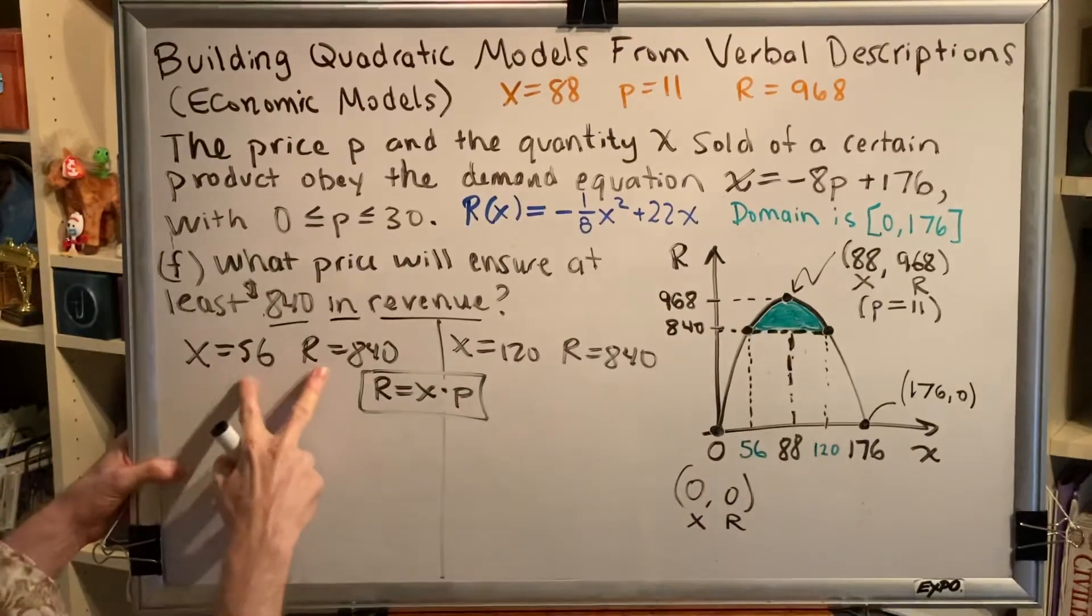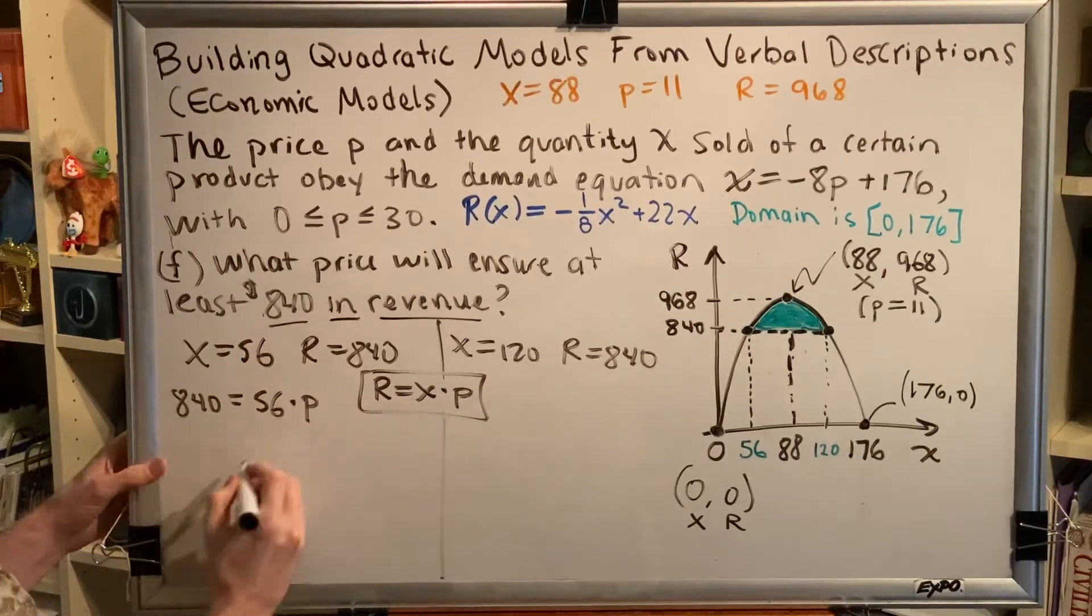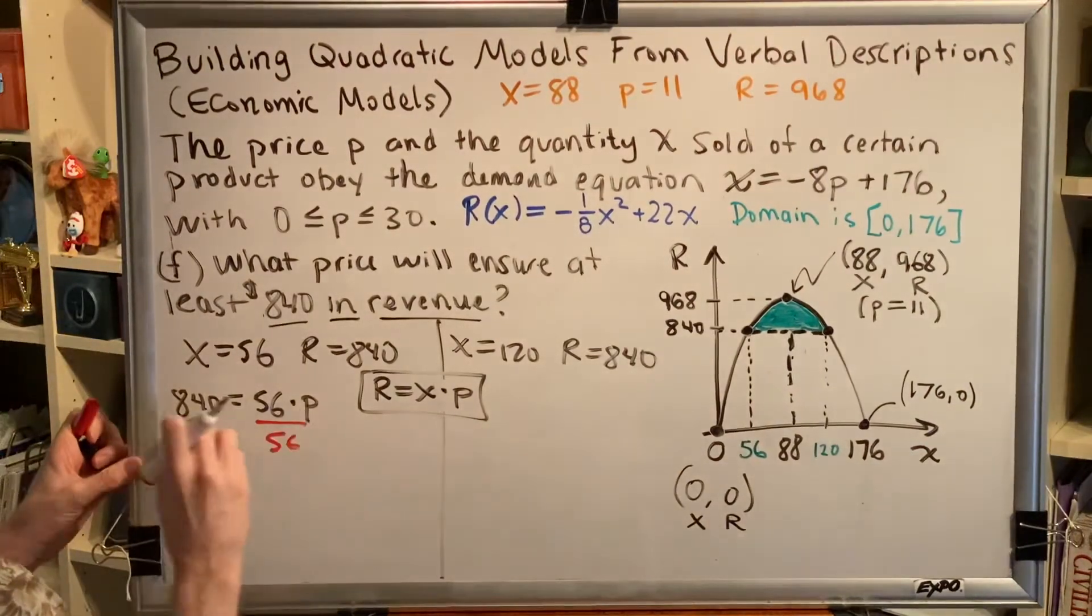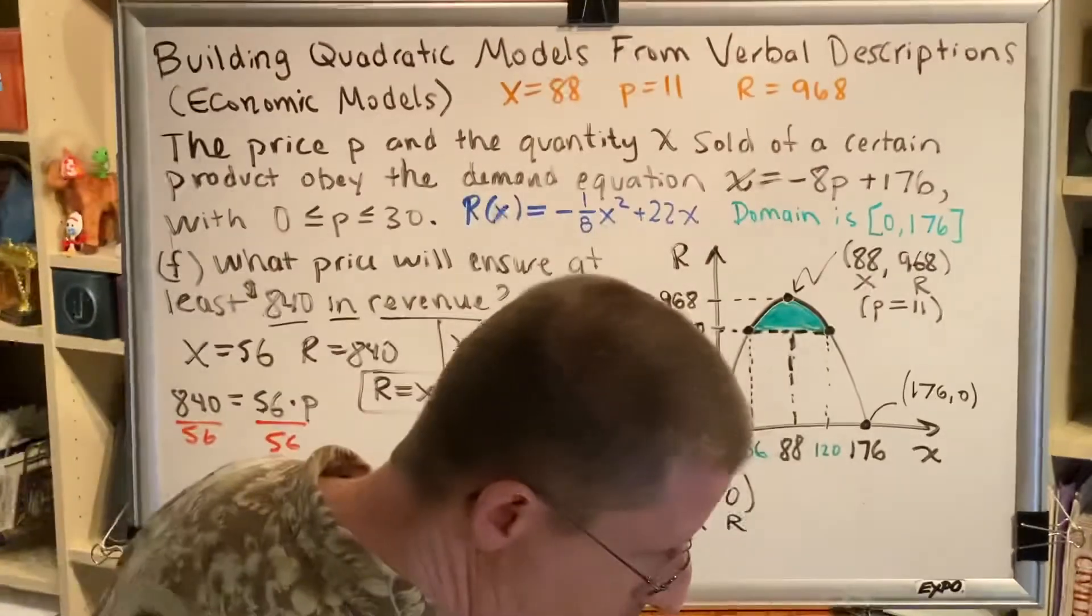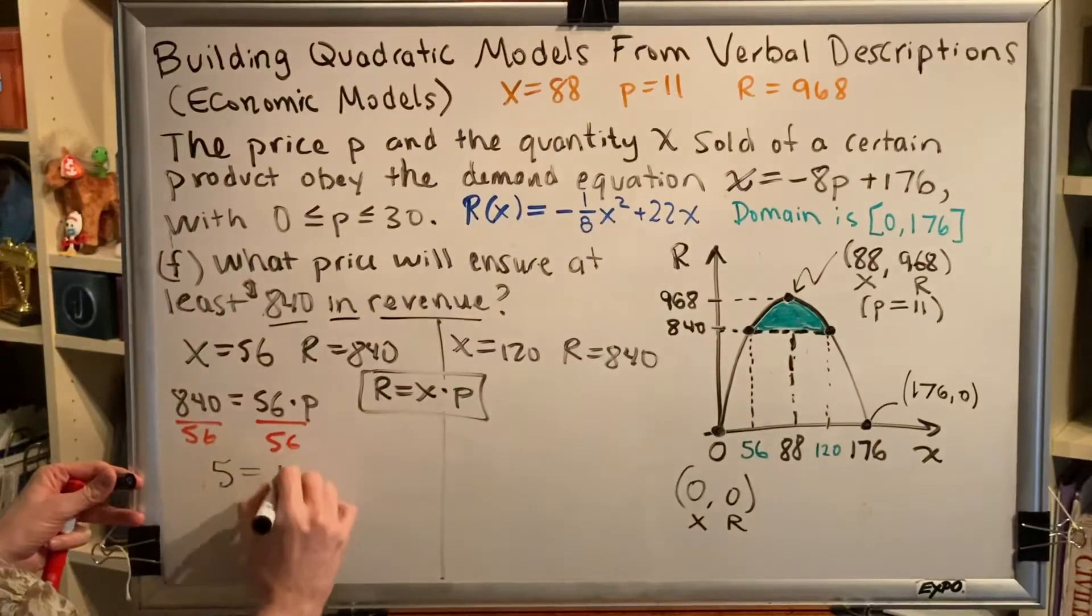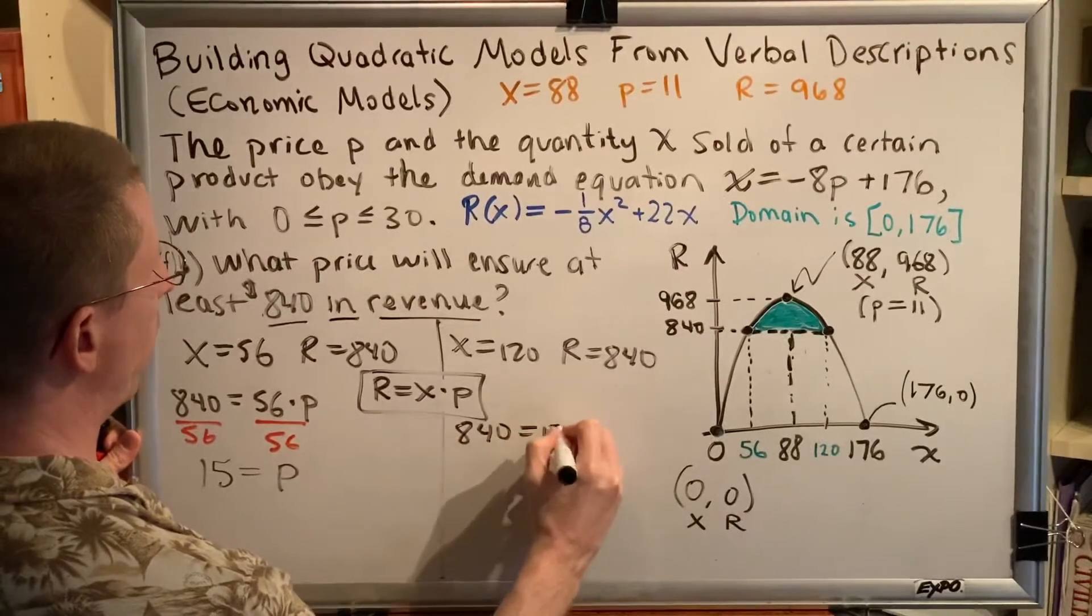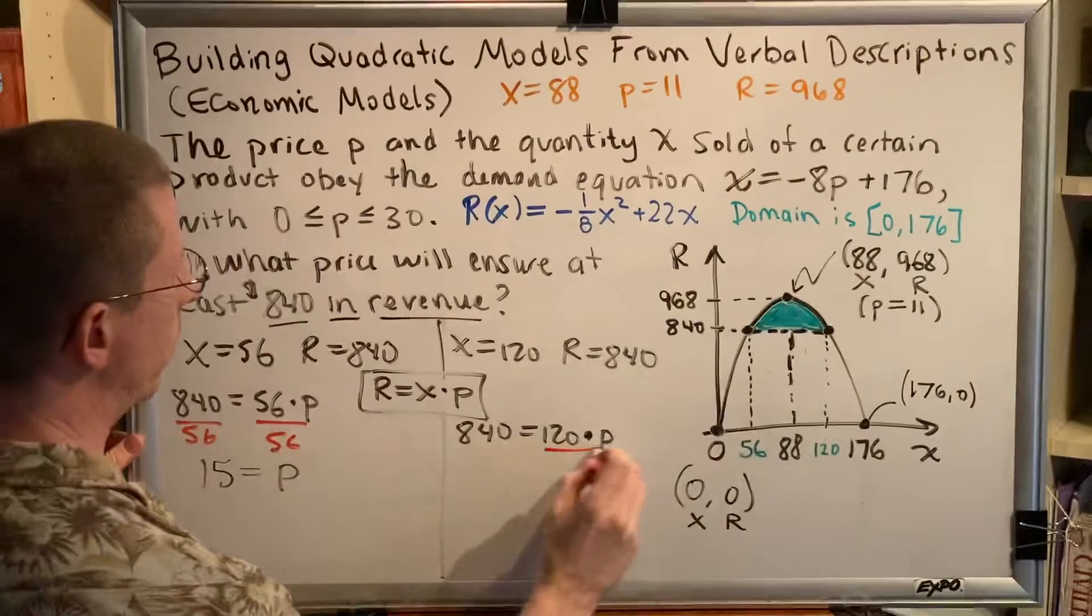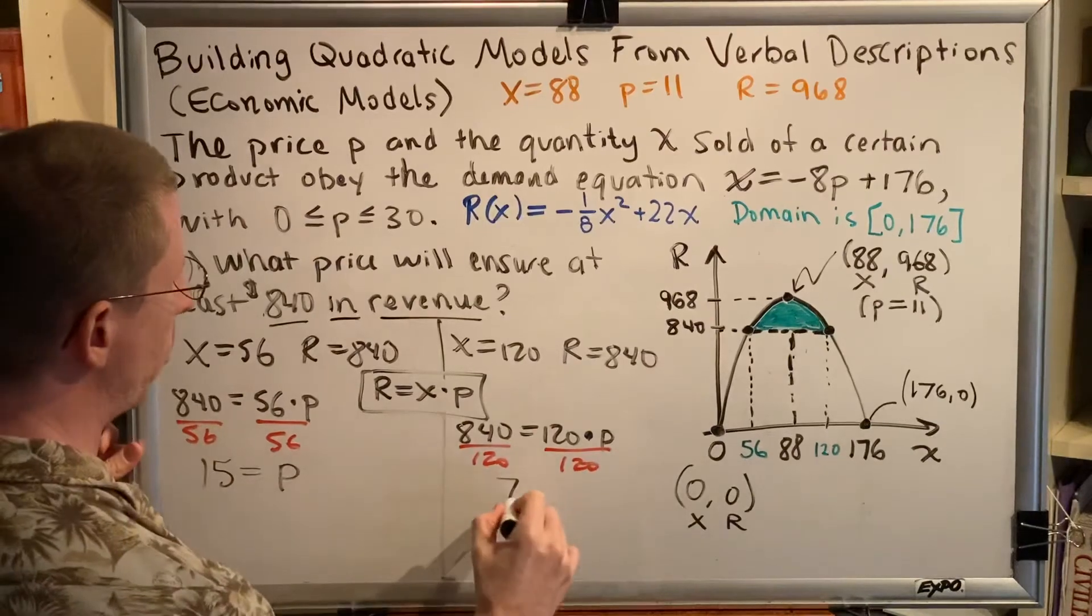Plugging these two values into this equation. 840 = 56 × p. Divide by 56 on both sides. And we have 840 divided by 56 is 15. 15 = p. Over here, same idea. 840 = 120 × p. Divide by 120 on both sides. And we're going to get 7. 7 = p.